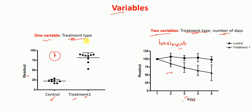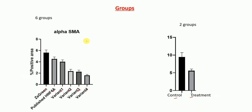I'm going to talk about groups now. As you can see, here we have one, two, three, four, five, six groups, whereas here we have only two groups: control and treatment.